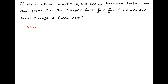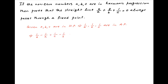We are given that a, b, and c are in Harmonic Progression, which implies that 1/a, 1/b, and 1/c are in Arithmetic Progression. Therefore, 1/b minus 1/a equals 1/c minus 1/b, which implies that 1/c is equal to 2/b minus 1/a.